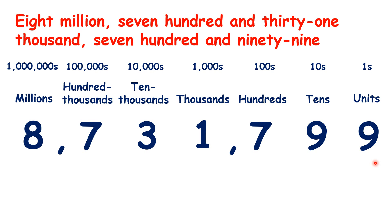It's important to understand how place value works. As we go from right to left, the numbers get 10 times bigger. So 10 units make 10, 10 tens make 100, 10 hundreds make 1,000, 10 thousands make 10,000, 10 ten-thousands make 100,000, and 10 hundred-thousands make 1,000,000. And this pattern continues forever.